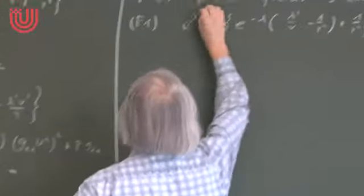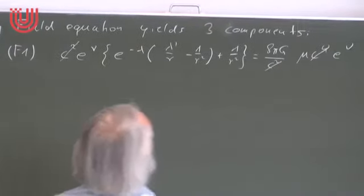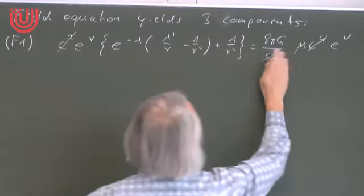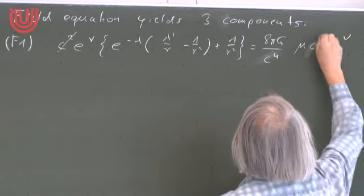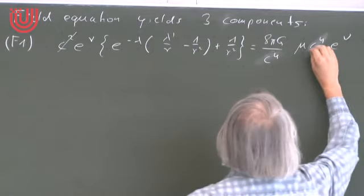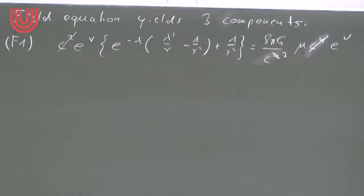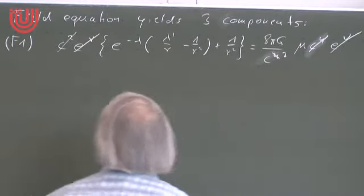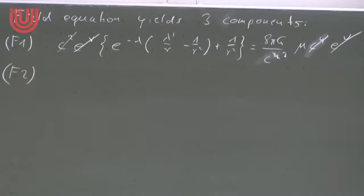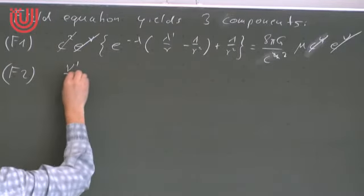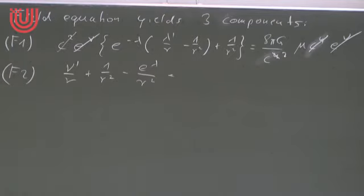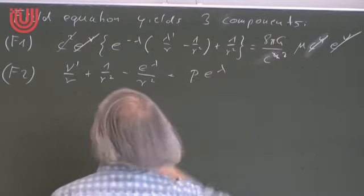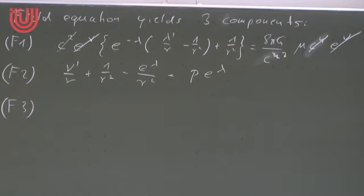Now we need the matching conditions at the surface r = r★. From electrodynamics, analogous junction conditions exist (jump conditions from Maxwell's equations). In general relativity, Einstein's equations tell you which fields can jump at a surface. An obvious necessary condition is that the metric must be continuous: if the metric had a jump at the star's surface, Christoffel symbols would have Dirac-delta singularities, causing freely falling particles to jump discontinuously. So the metric must be continuous.